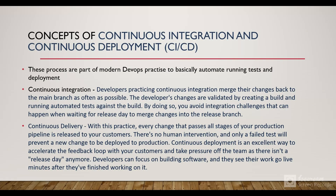Before doing a demo, let's discuss continuous integration and continuous deployment, which are part of modern DevOps practices. Continuous integration means we are continuously developing and merging our changes back to the branch as often as possible. Developers' changes are validated by creating a build and running automated tests against the build. This avoids integration challenges that can happen when waiting for a release date to merge changes. Automated tests are run to maintain consistency and check code quality.